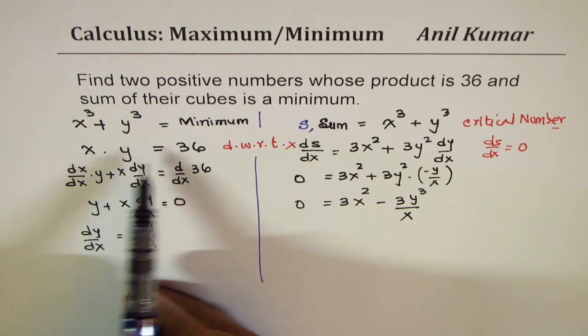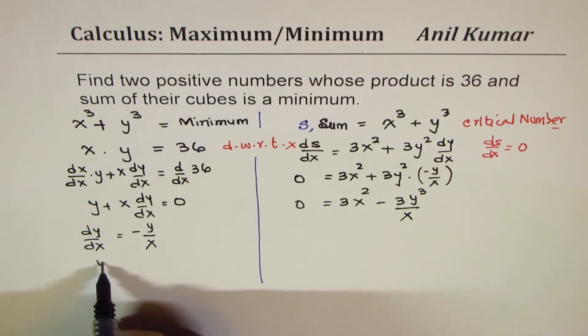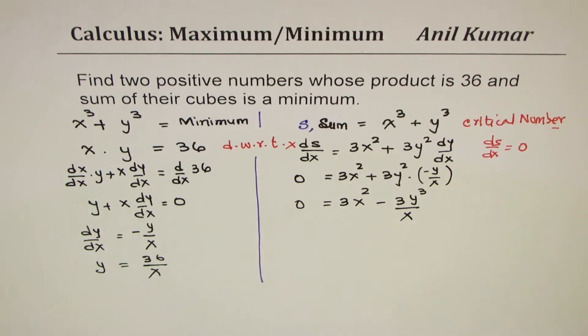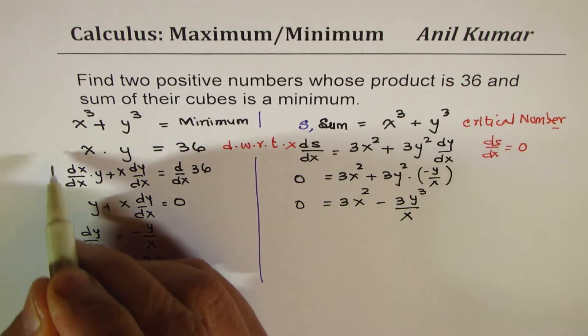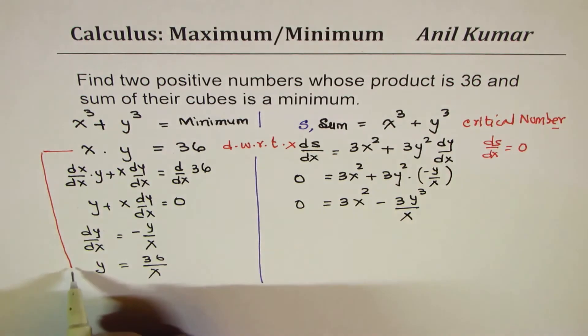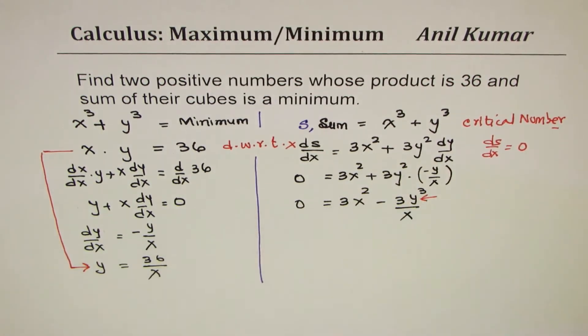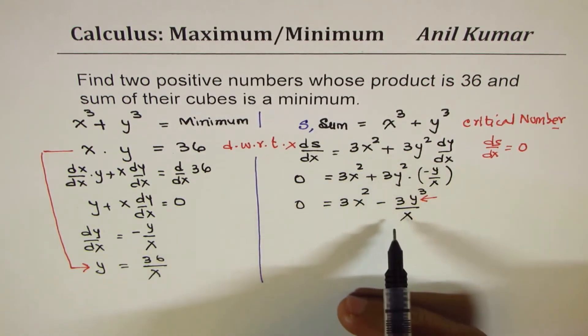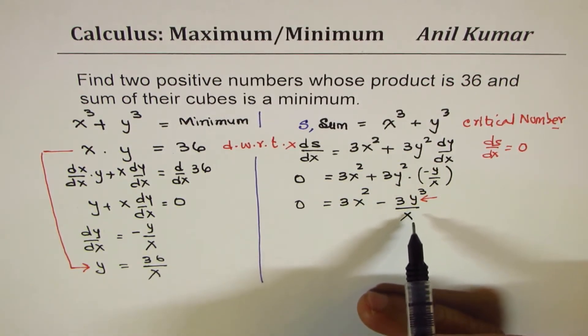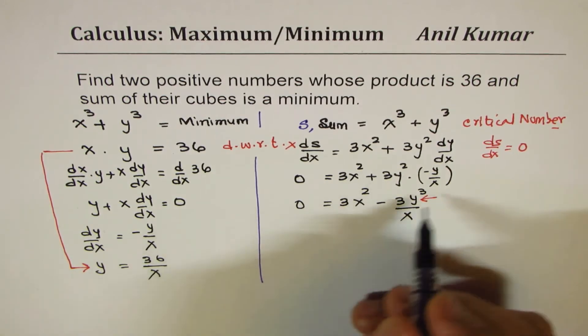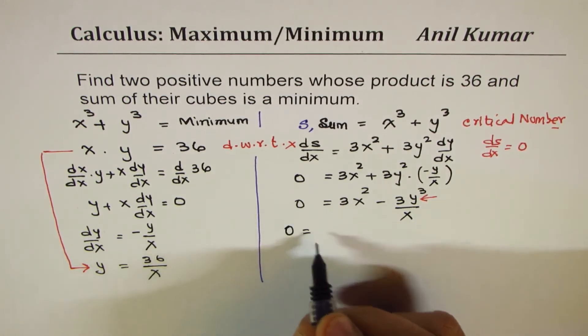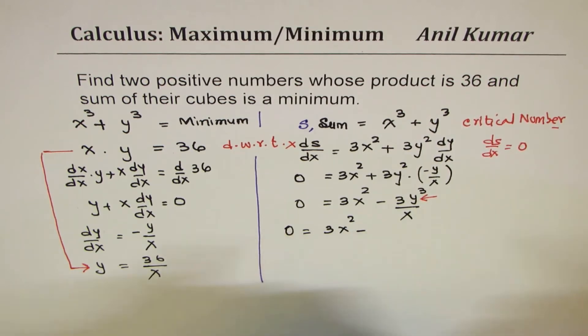From here we isolated y, so we can substitute this y here. Now you'll also notice that if I take, let me first change this, so we'll write this as 3x² minus...